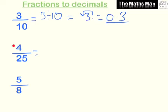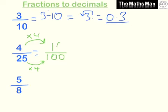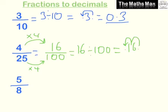For 4 over 25, we can make the bottom number 100. To get from 25 to 100 we multiply by 4, so we do the same to the top — 4 times 4 is 16. Now this is 16 divided by 100: take 16, move the decimal point back once and twice, giving us 0.16.